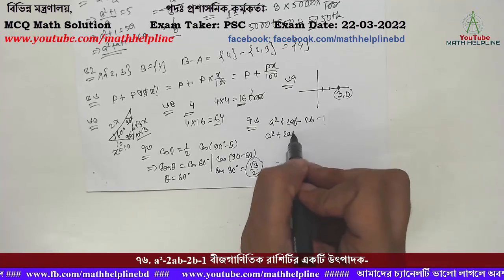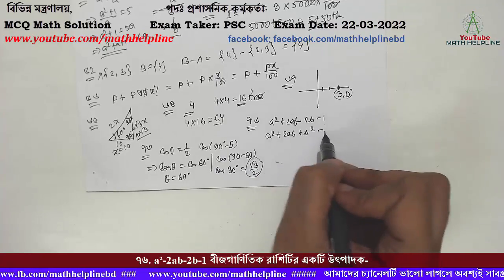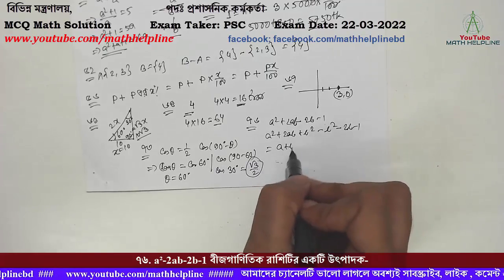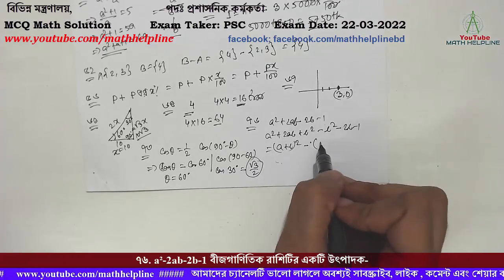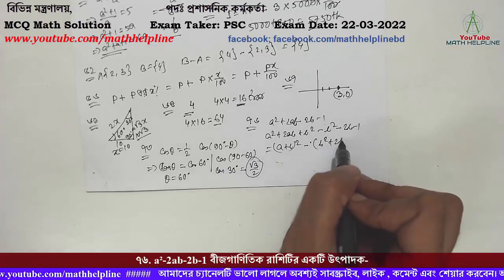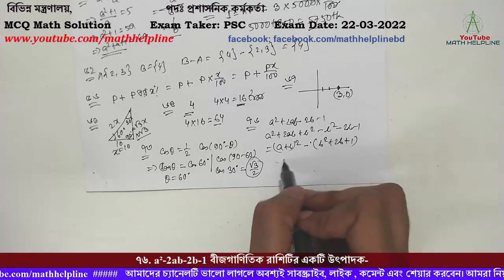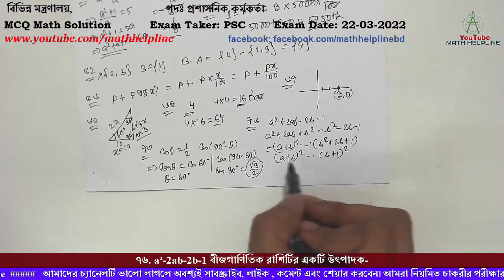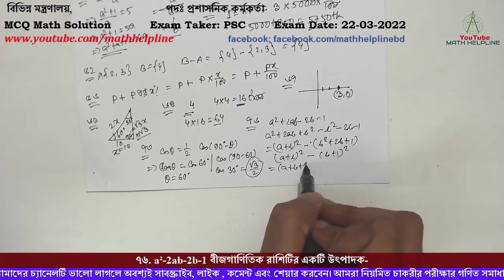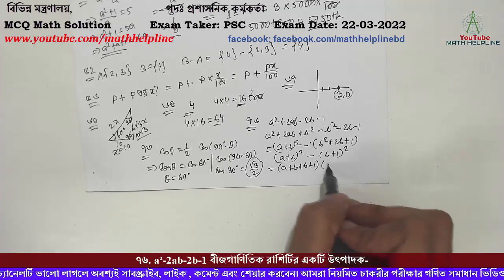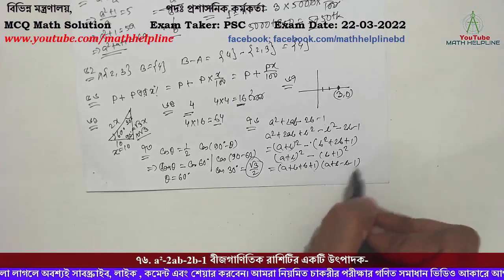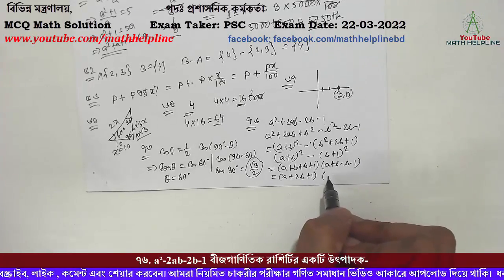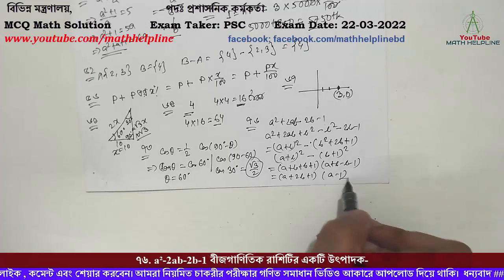Amra kori S square plus B square - [applying algebraic identity]. Tahale S square minus B square sutro pore A plus B plus B plus 1, are tasbe ochhe A plus B minus B minus 1. Tahale eta kole pao jabe ochhe A plus 2B plus 1. Eta kole pao jabe ochhe A minus 1, tahale A minus 1 habe ochhe - [expanding using difference of squares formula to get A+2B+1 and A-1].